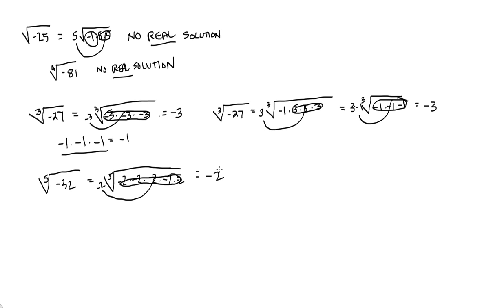There's a shortcut here: any time you see a negative inside a radical with an odd root, just go ahead and take out the negative, and then treat the rest of it as you normally would for the root. If there's an odd root, just take the negative out and treat the rest normally. That's what I need to say about finding the roots of negative numbers. See ya!